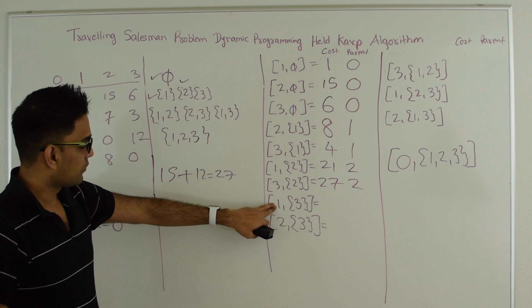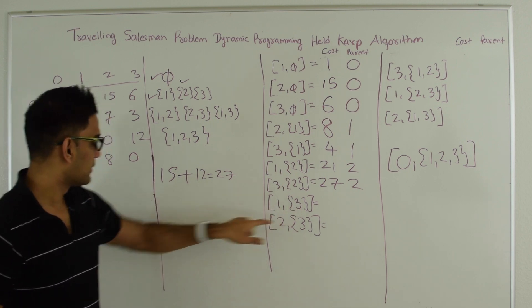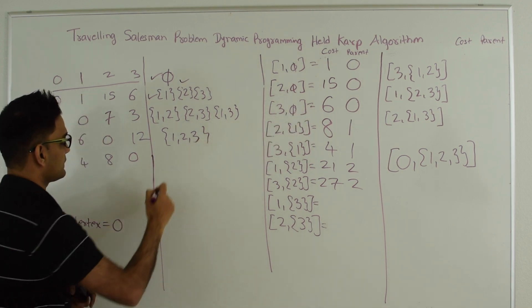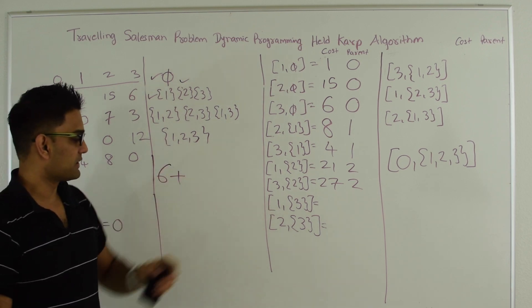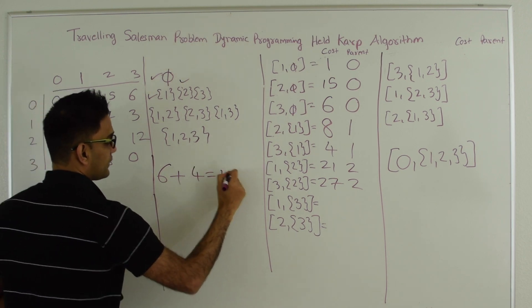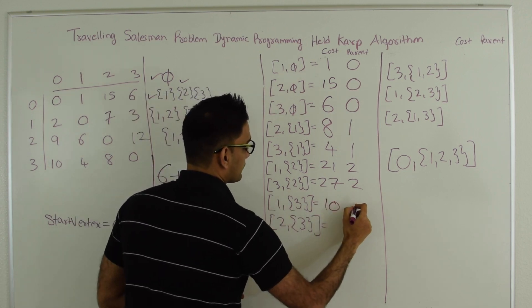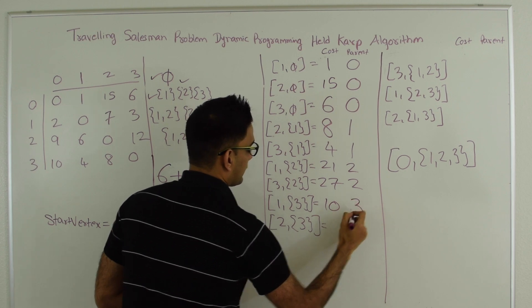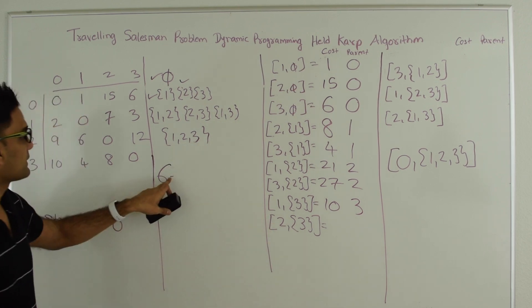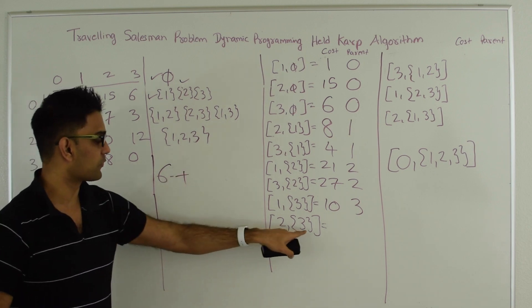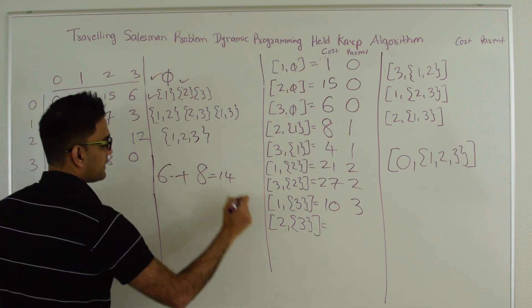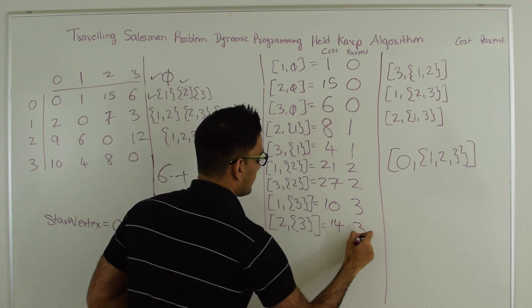Next we pick subset {3}. For vertex 1 via 3: cost to reach 3 from 0 (which is 6) plus distance 3 to 1 (which is 4) equals 10, with parent 3. For vertex 2 via subset {3}: cost to reach 3 from 0 is 6 plus distance 3 to 2 (which is 8) equals 14, with parent 3.